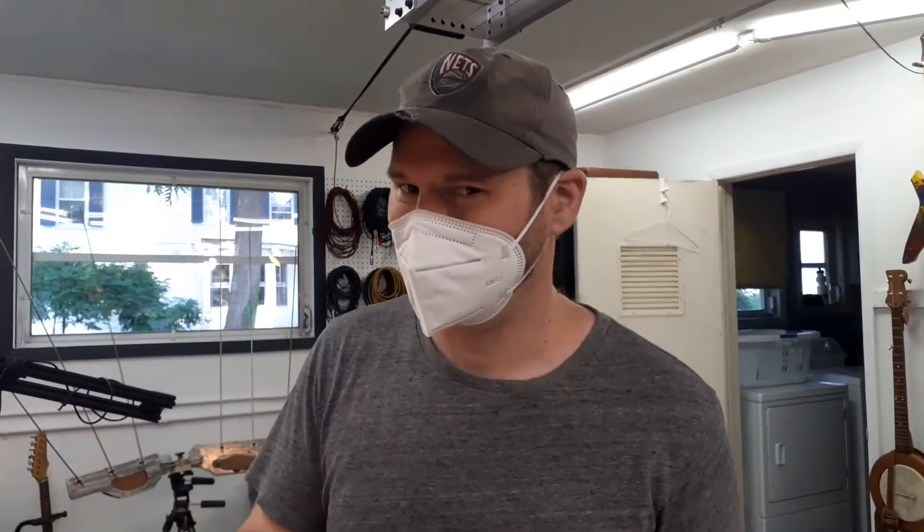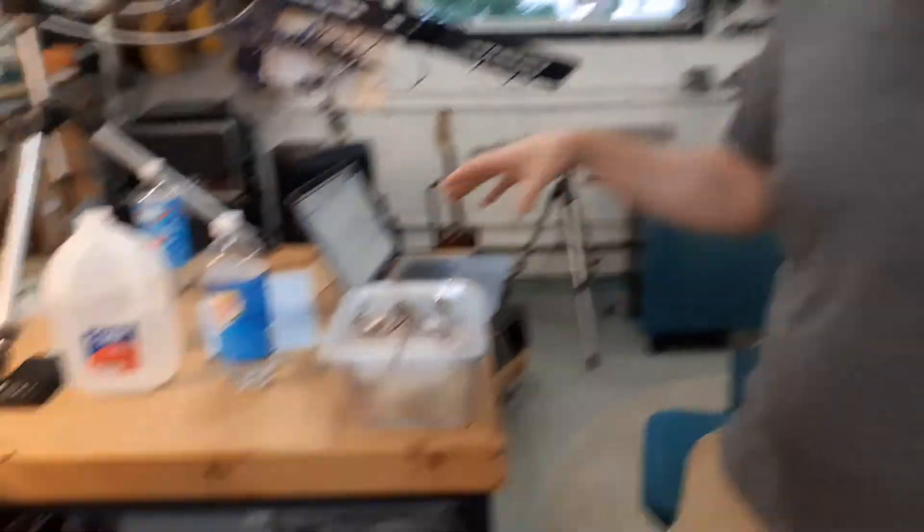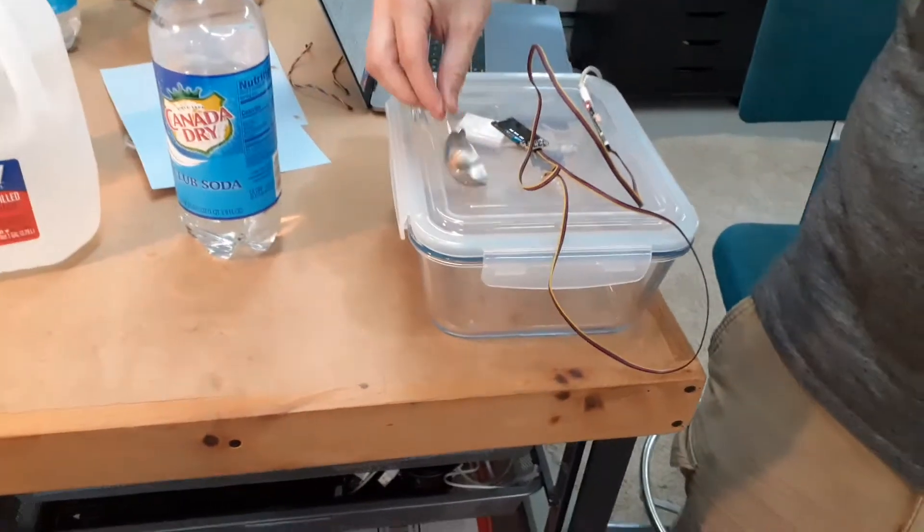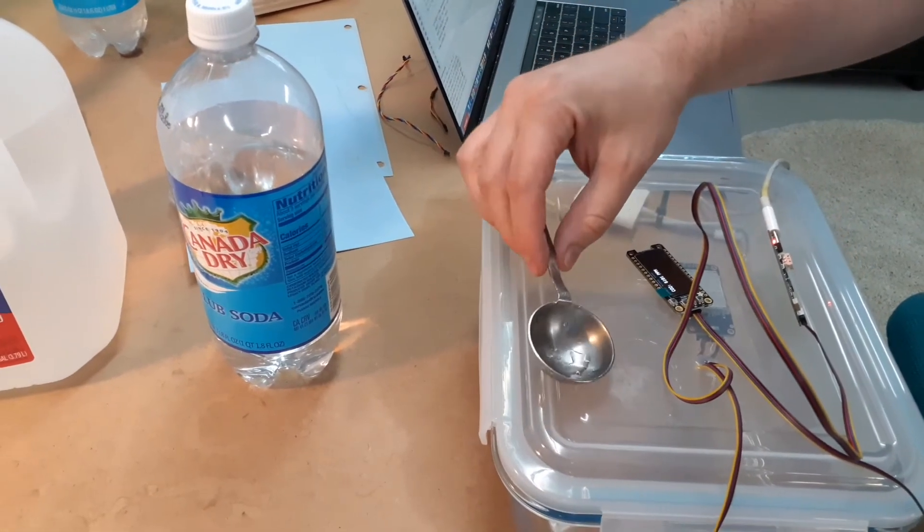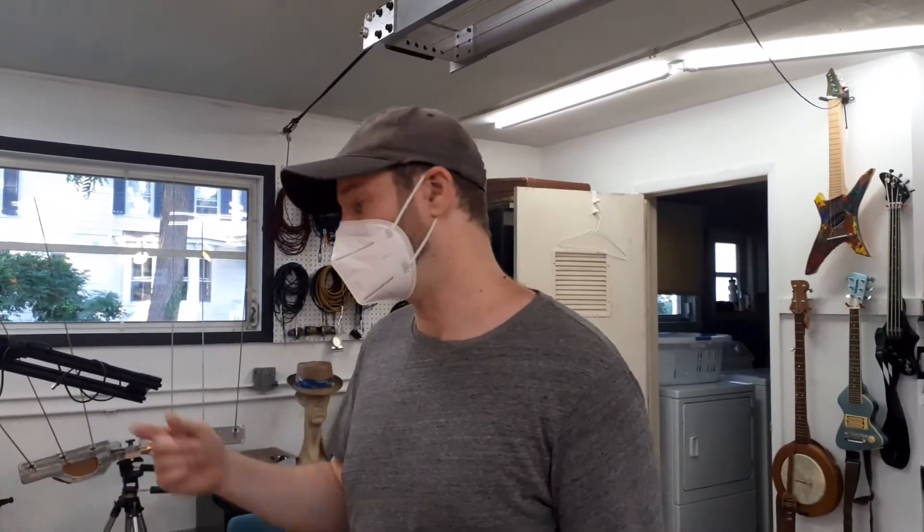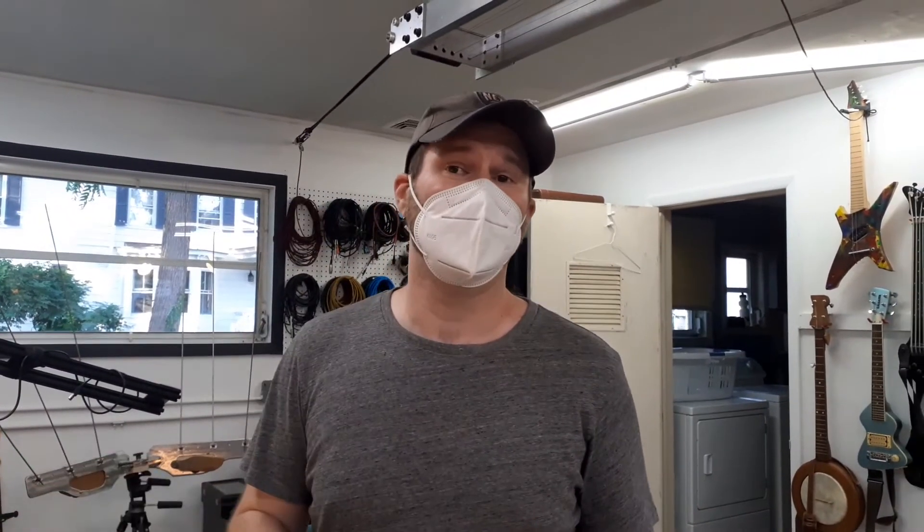So we use one tablespoon of club soda, and then we know what the concentration of CO2 is in the average club soda. And then we can look at the parts per million for that size of container we have and determine whether or not our sensor is accurately showing how much CO2 has been released inside that container.